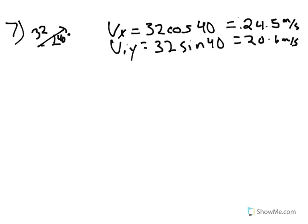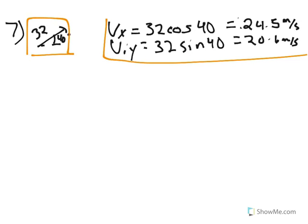Number 7: we have an object being shot at an angle of 40 degrees above the ground at 32 meters per second. The very first thing we have to do is break it into components. We end up with vx equals 24.5 and viy equals 20.6. Once we have these numbers, we can forget about the original angle. All we are concerned with are 24.5 for vx and 20.6 for viy.